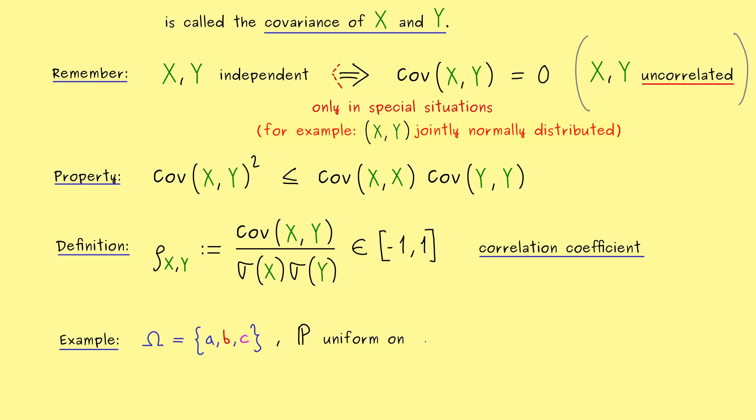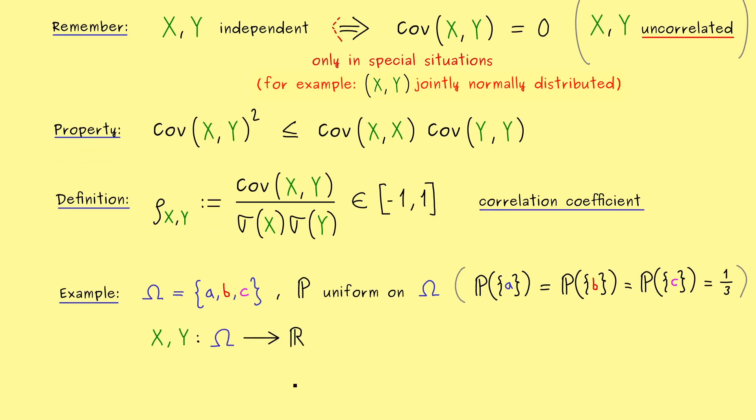And now our probability measure P should be uniform on omega. This means, all the singletons here have the same probability and it has to be one third. Indeed, that's what you know, that's what we mean by a uniform distribution on a discrete set. And now missing is only the explicit definition of the two random variables.